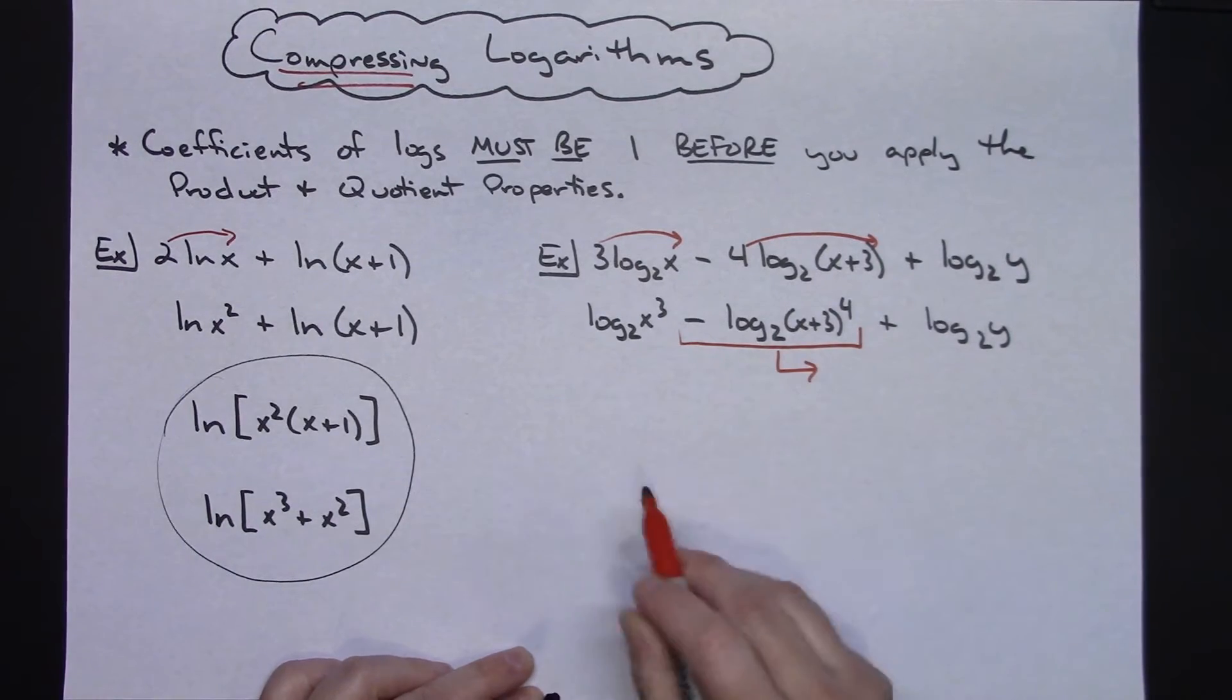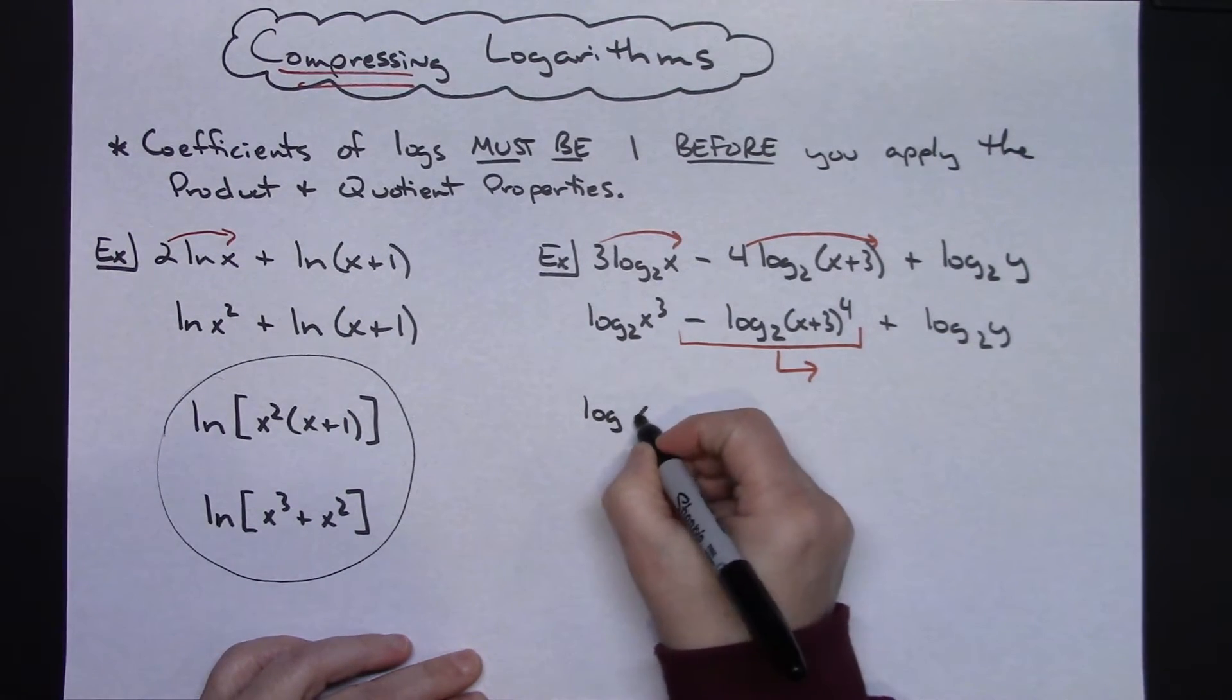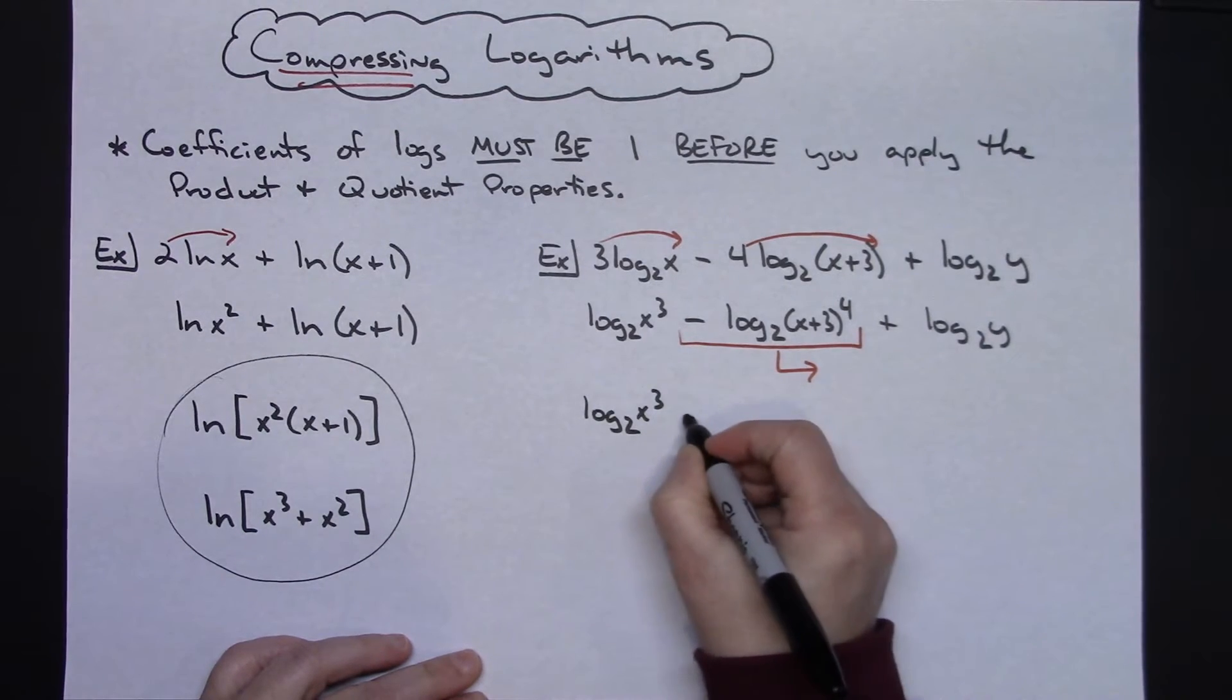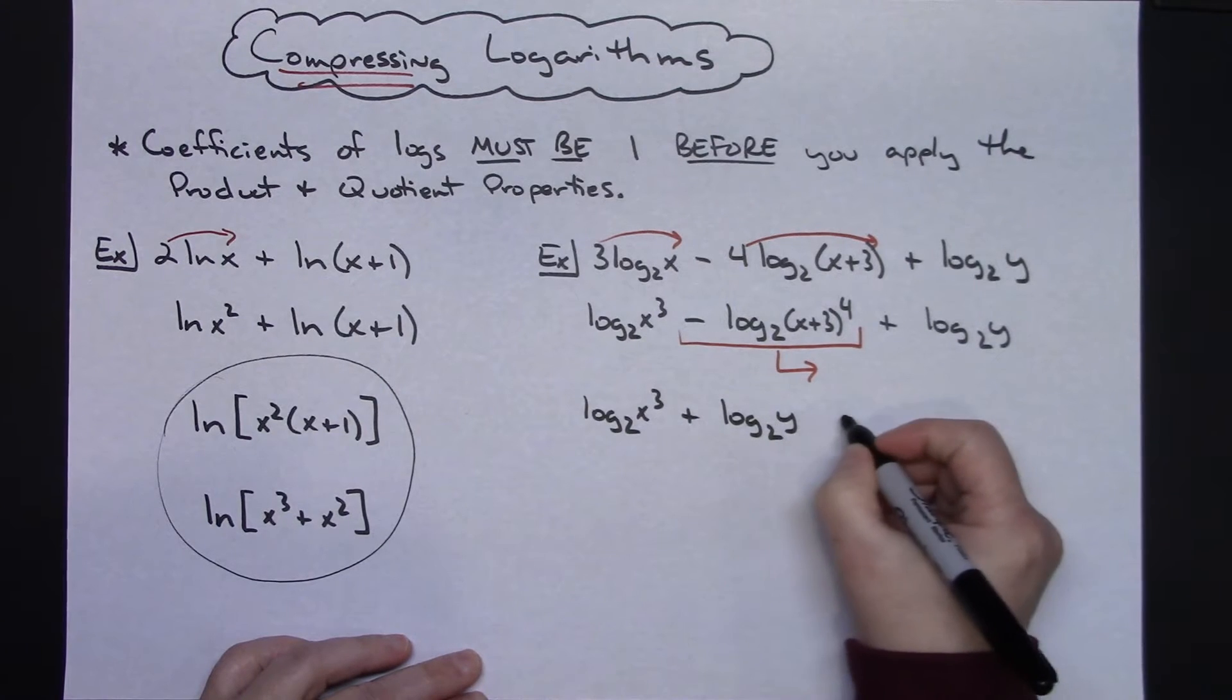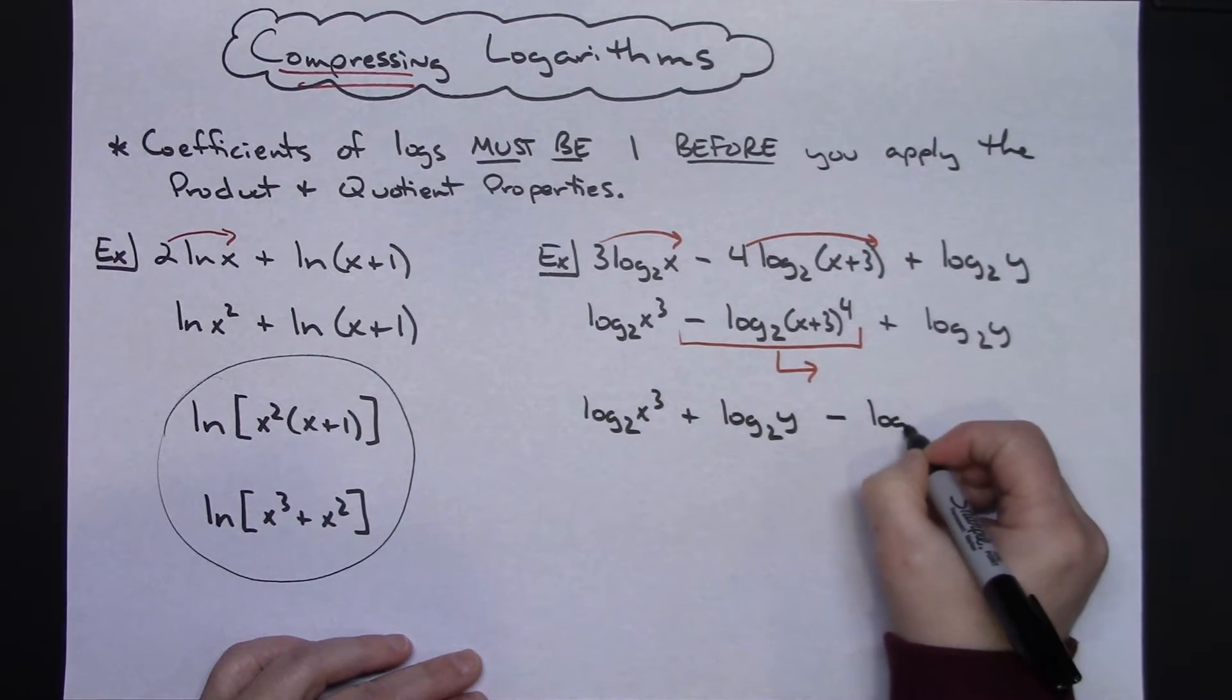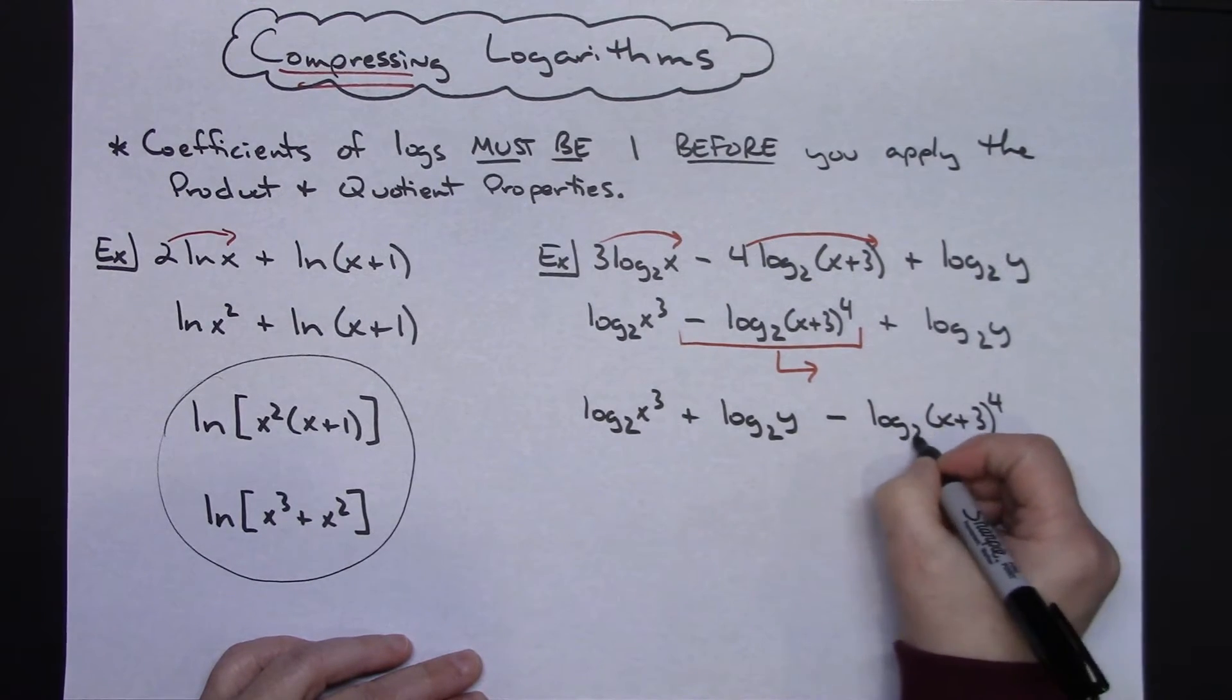So then I'm going to have the log of x to the third base 2 plus the log of y base 2 minus the log of (x+3) to the fourth base 2.